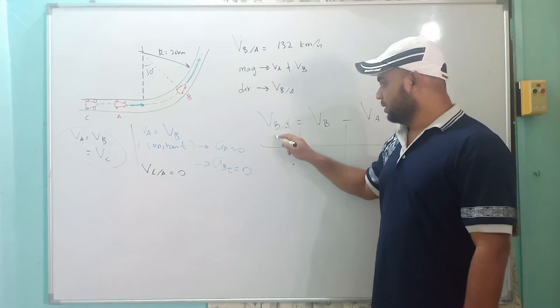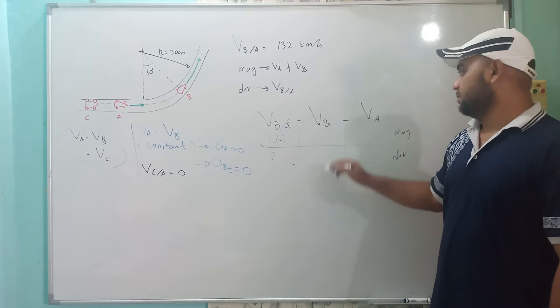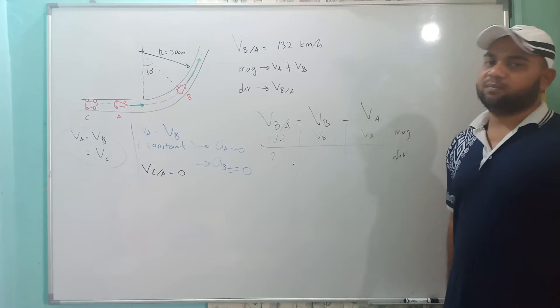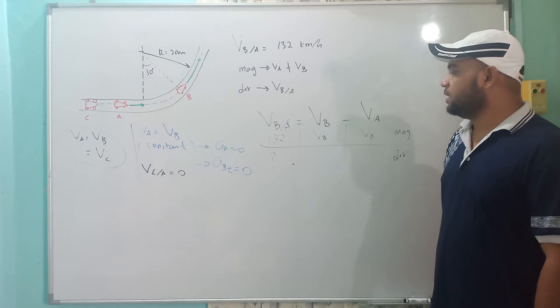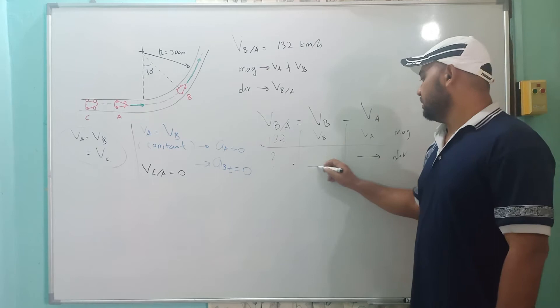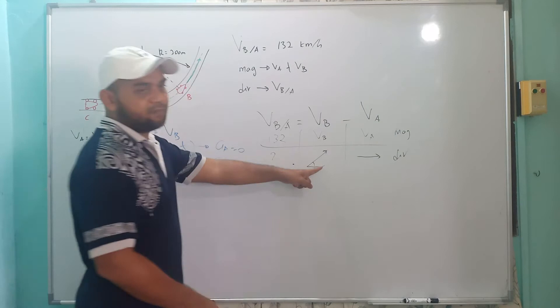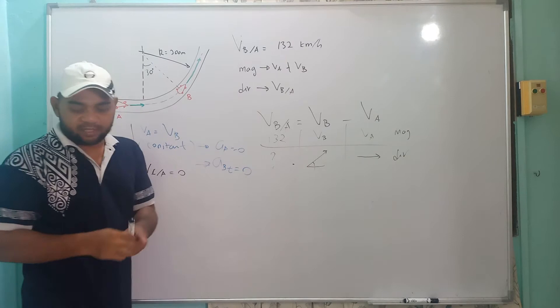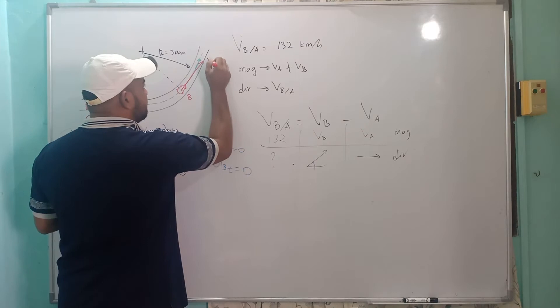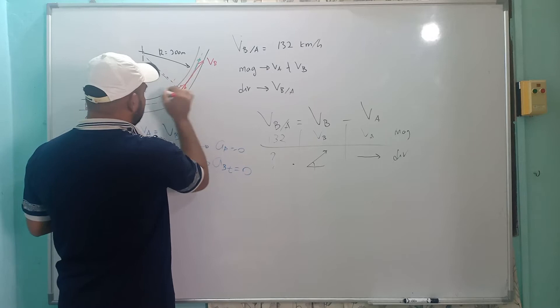VBA is given as 132, but its direction is unknown. VB magnitude is unknown. VA magnitude is also unknown. However, the direction of VA is known from the figure. The direction of VB is tangent to the curve — since the angle here is 30 degrees, and this is 90 degrees, working through the geometry this angle must also be 30 degrees.